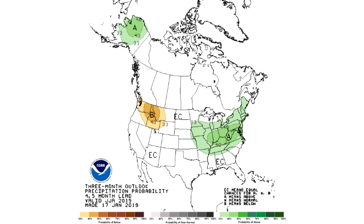NOAA's forecast is again different from the model guidance and the analogs, showing the northeastern United States in above-average precipitation, the southeastern United States not quite as confident, and below average in the northwest. At this point, I'm not ready to talk about precipitation definitively.